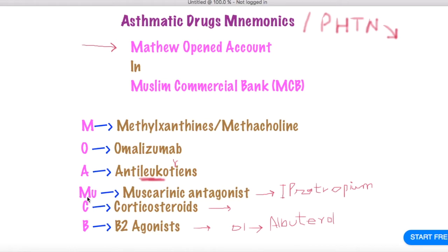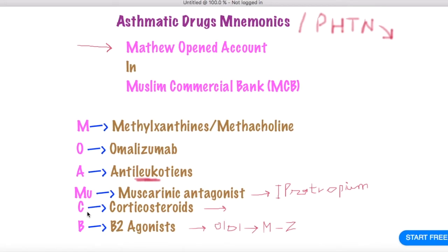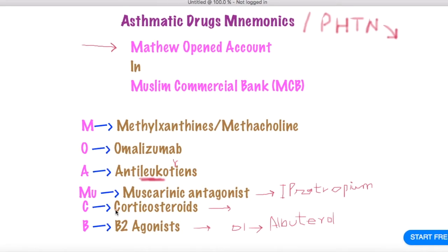Then 'Muslim' gives us M for muscarinic antagonists. The very famous drug here is ipratropium — you've got to remember this drug. Then we have C for corticosteroids.